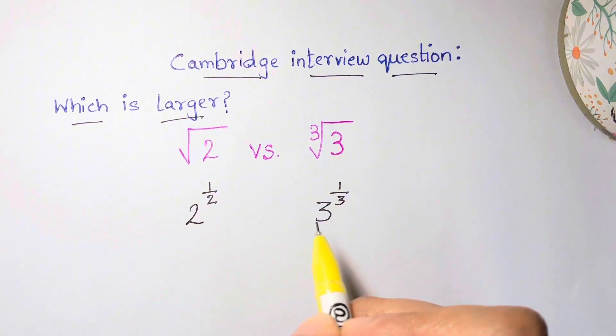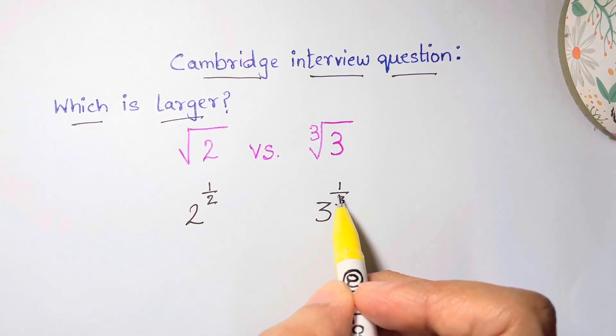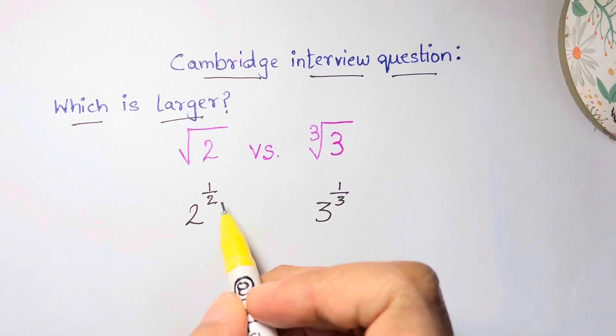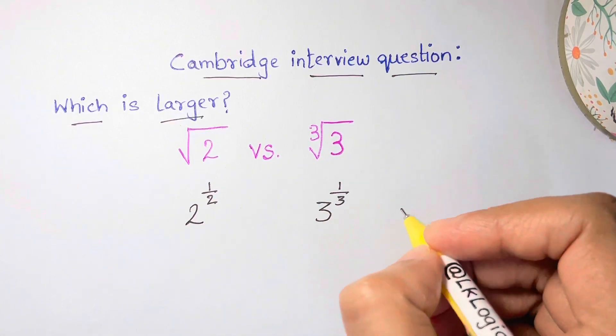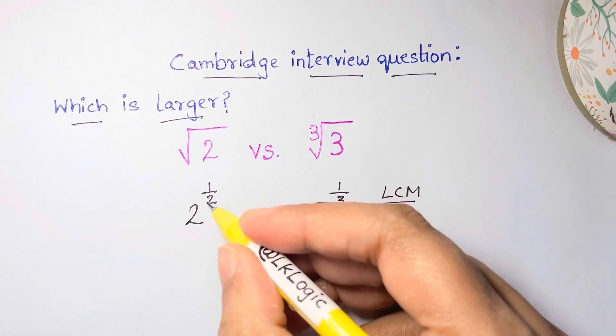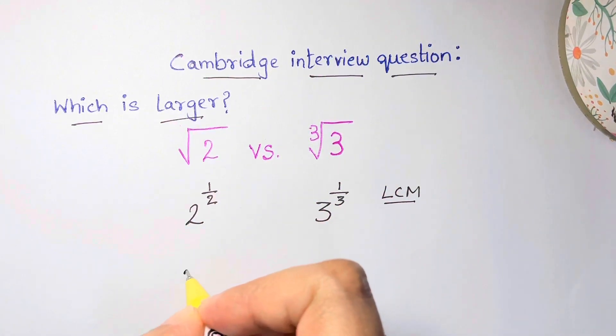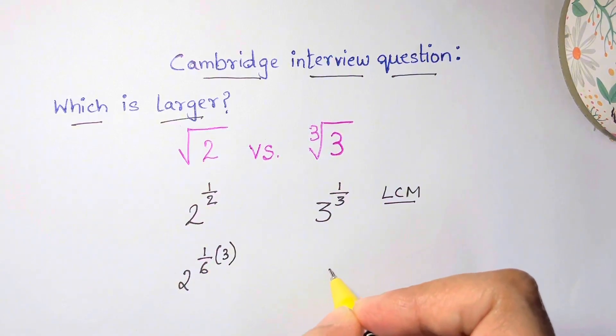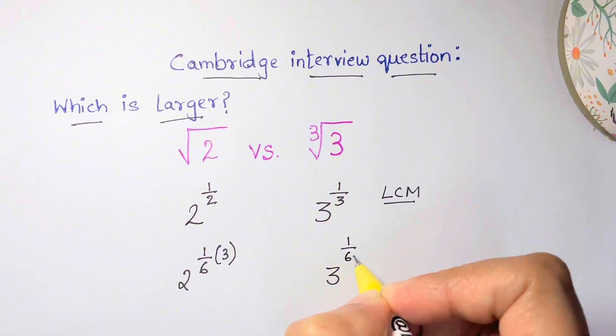Here we are going to equate the indices. Let's take the LCM for that, so the LCM for 2 and 3 is 6. We're going to take 1/6 times 3, and here 3 to the power of 1/6 times 2. So here we have 2 cubed to the power of 1/6, and here 3 squared to the power of 1/6.